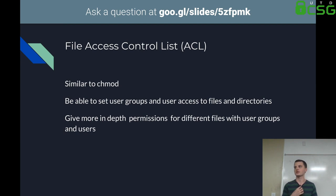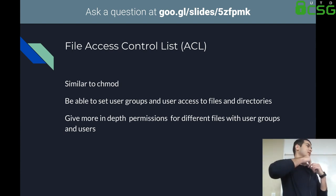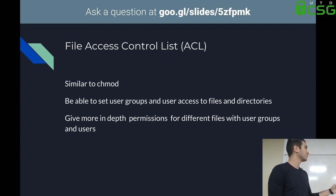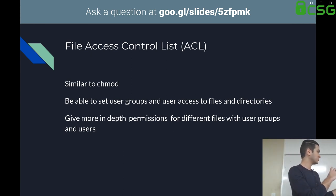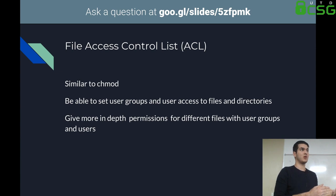On to file access control lists (FACL) with Andrew. File access control lists seem redundant if you use chmod, but you can set more specific permissions with setfacl. It lets you set a group and a user and set what permissions they have for each file and folder, and you can even change what file and folder a user has access to on the fly.